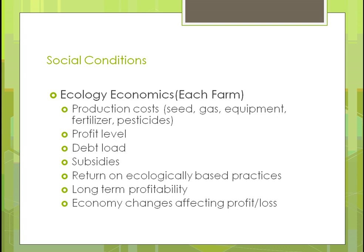Looking at economics: consider production costs — seed, equipment, fertilizer, pesticides — and what profit level you want. Factor in debt load and any subsidies you receive. Without subsidies, could you handle the debt and still get the profit you need? We need to look at how to return to ecologically based practices for long-term profitability. Changes to the broader economy will affect profit and loss — for instance, at the time of recording, corn prices were down about 30% from harvest time, which hugely impacts farmer profits.